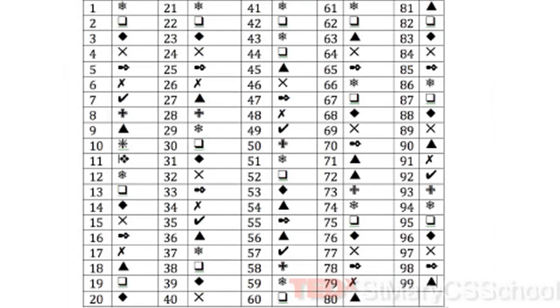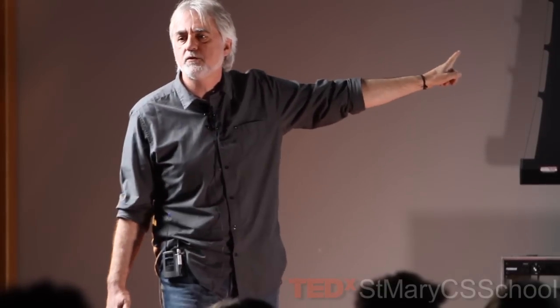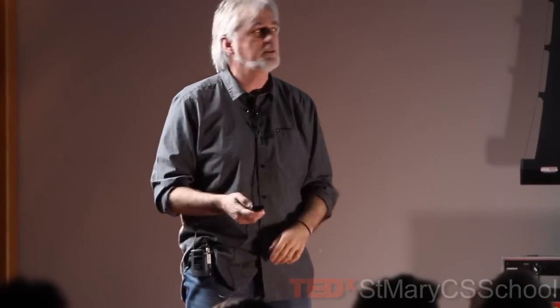I don't know what number you picked, but I know that if you didn't get a triangle, you didn't do the computation right. This is a very powerful idea in math called error-detecting code. Your credit card number has the same property — did you know that? I don't know your credit card number, but if you misquote it, I'll be able to tell you that's not your credit card number. Somebody discovered this pattern not from math theory, but by playing. You have to play, and by playing — by being bored and not knowing what to do — people discovered all kinds of things.